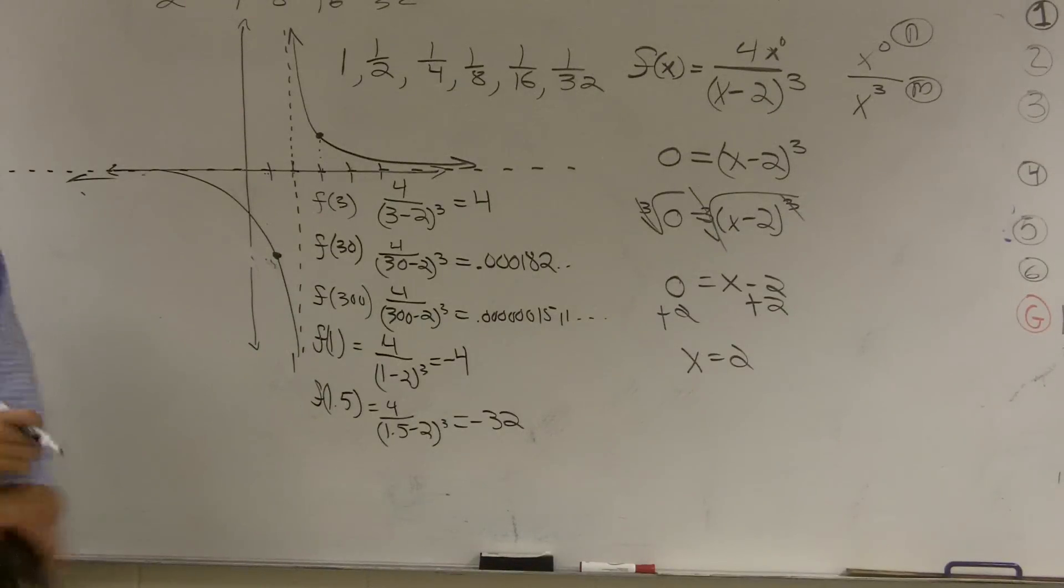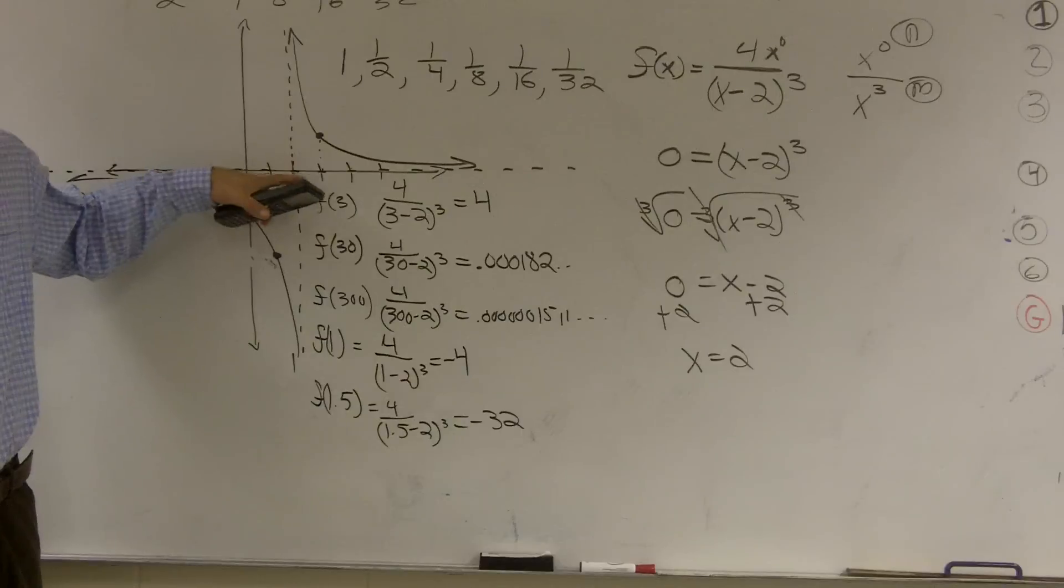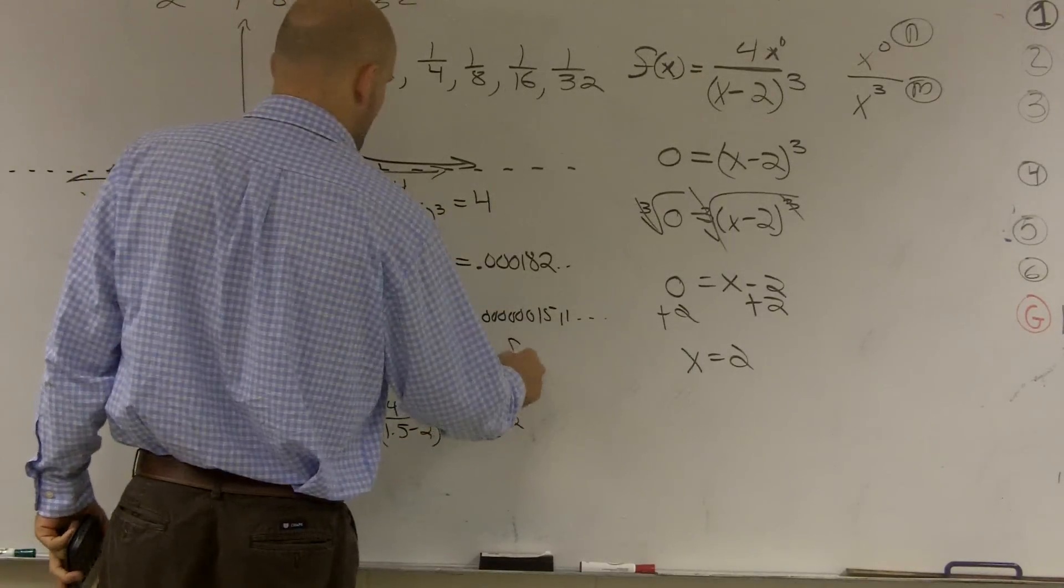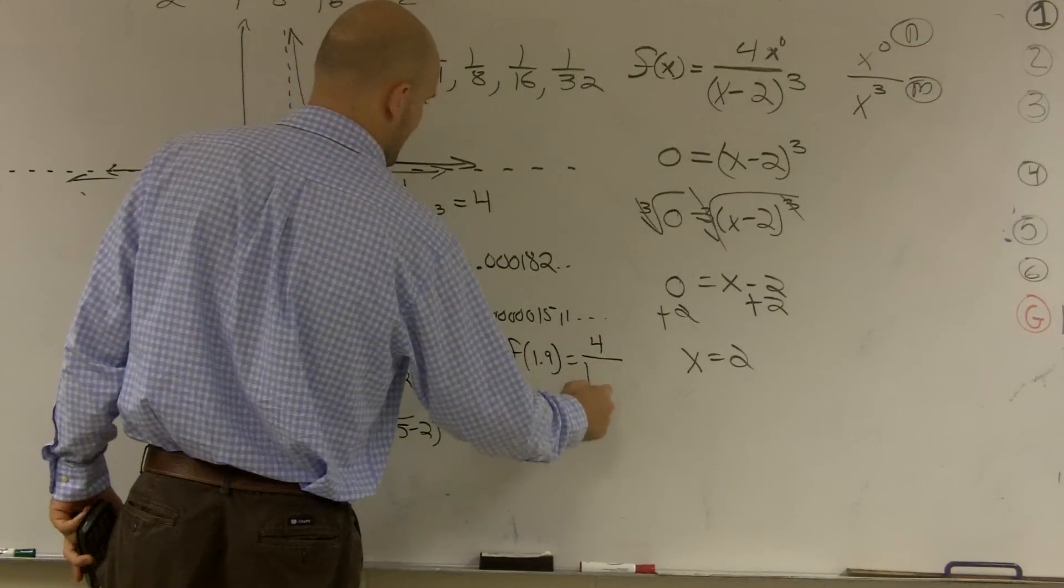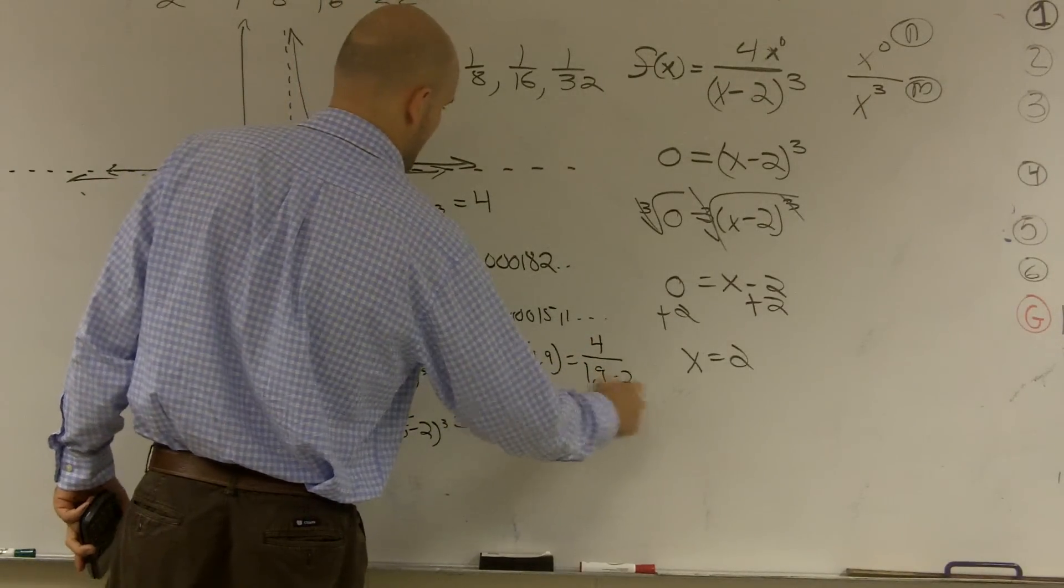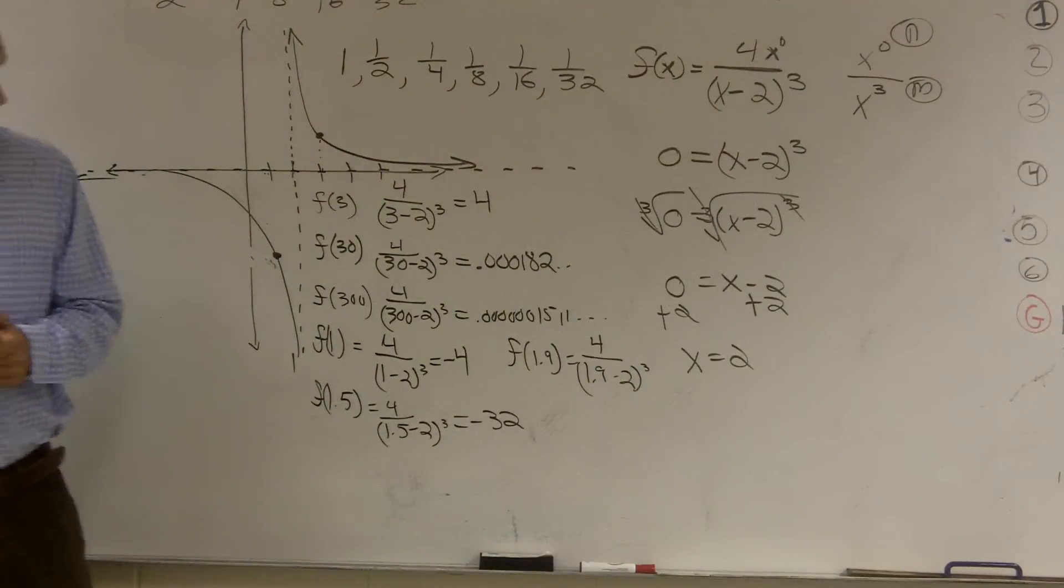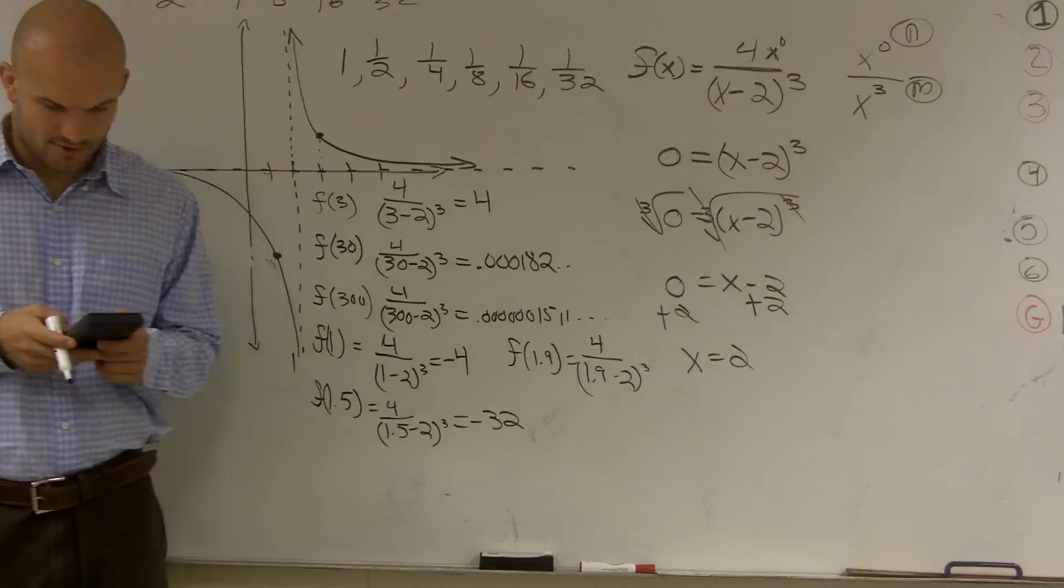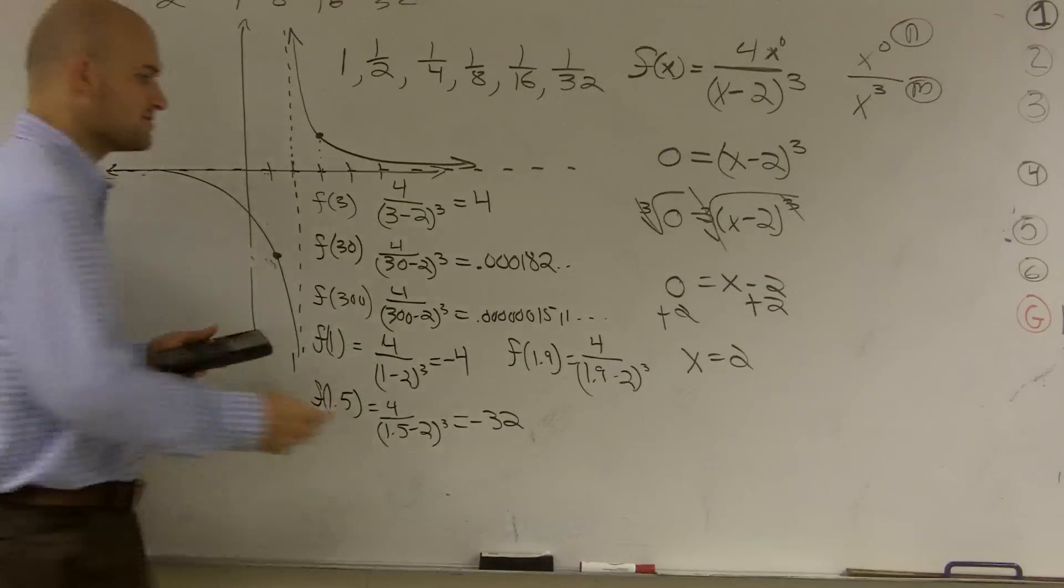Then let's do, let's get something even closer. So let's split that. Let's just do 1.9. Let's see really close. How much would it be really close? So I'll do f of 1.9 equals 4 divided by 1.9 minus 2 cubed. So 4, 1.9 is going to be 0.1 raised to the third power. 4 divided by that is going to be 4,000.